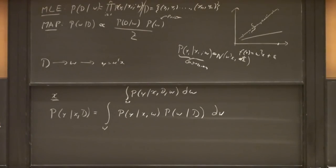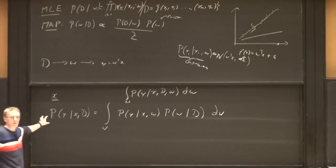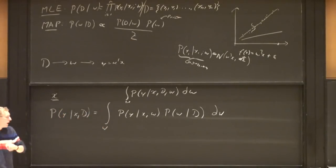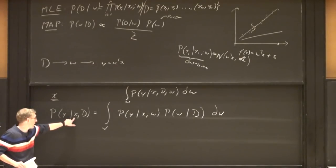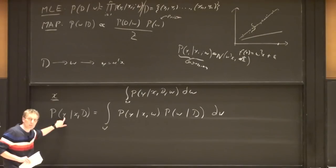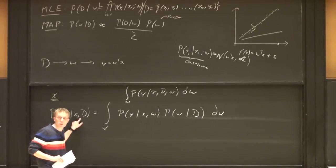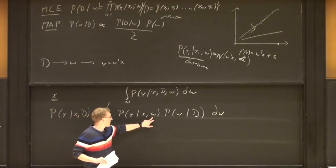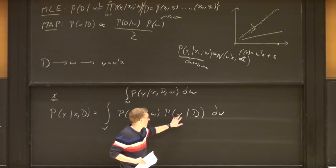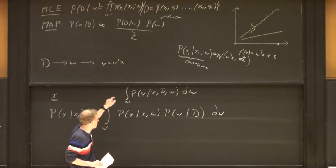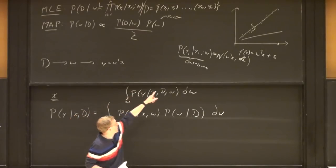We want: given a test point X, predict label Y with our training data. We decompose: if we had model W, the prediction is just a Gaussian distribution. We have P of W given D — that's the MAP term — times the prediction term. Using Bayes' rule: P of W given D equals P of D given W times P of W, normalized. We choose Gaussian priors throughout. The conjugate prior is the prior that gives the posterior the same distribution family.